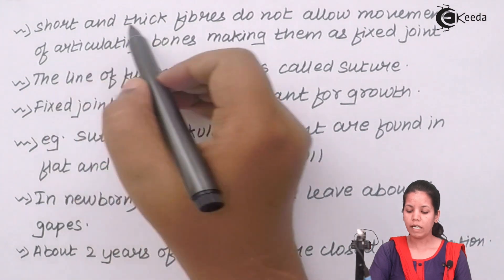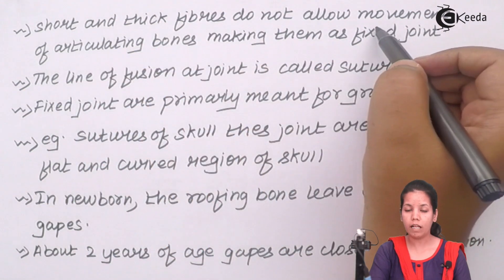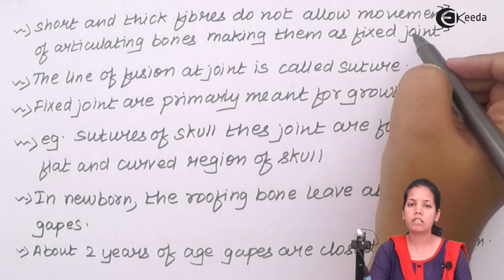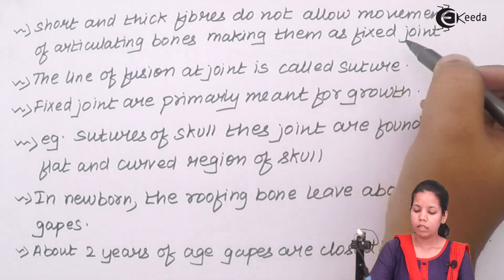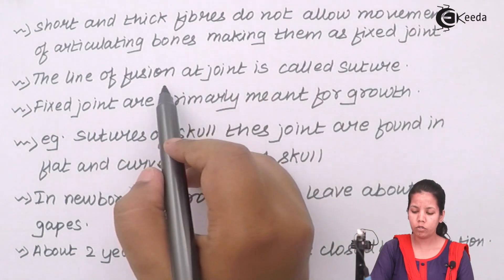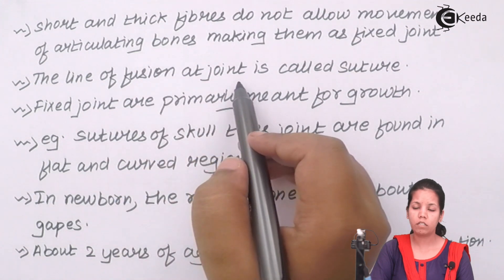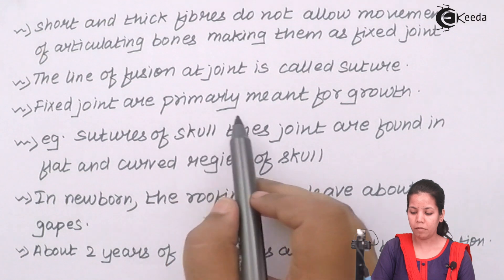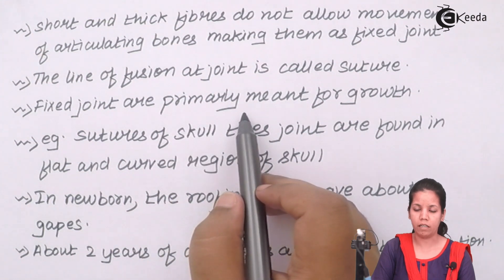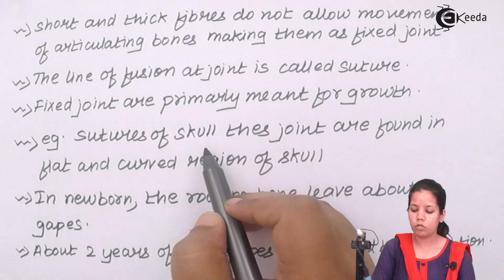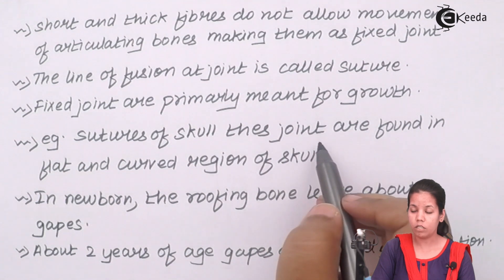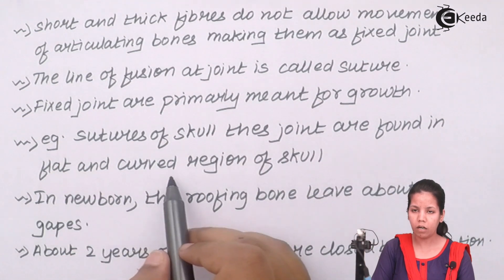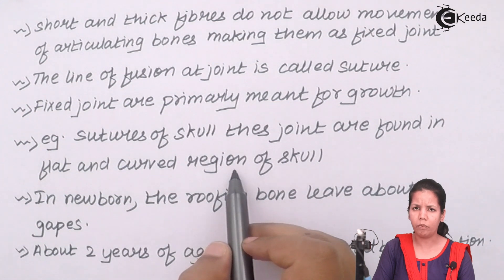Short and thick fibers that do not allow the movement of articulating bones make them fixed or permanent joints. The line of fusion at the joint is always termed a suture. Fixed joints can be primarily meant for the growth of that particular region — for example, the sutures of your skull. These joints of your skull are basically flat and curved in the region of your skull or brain region.